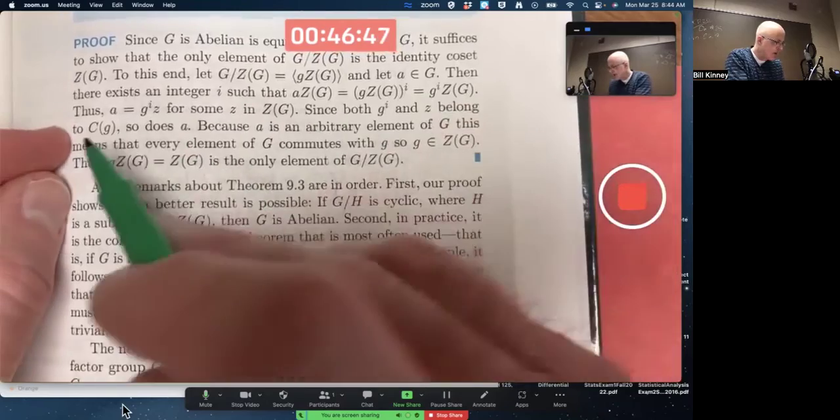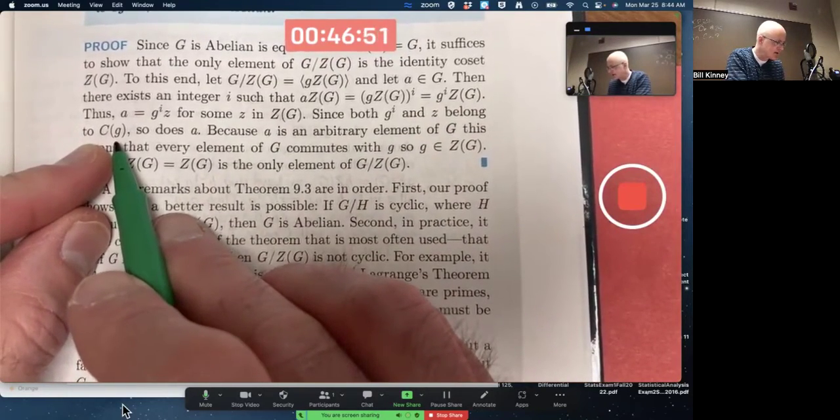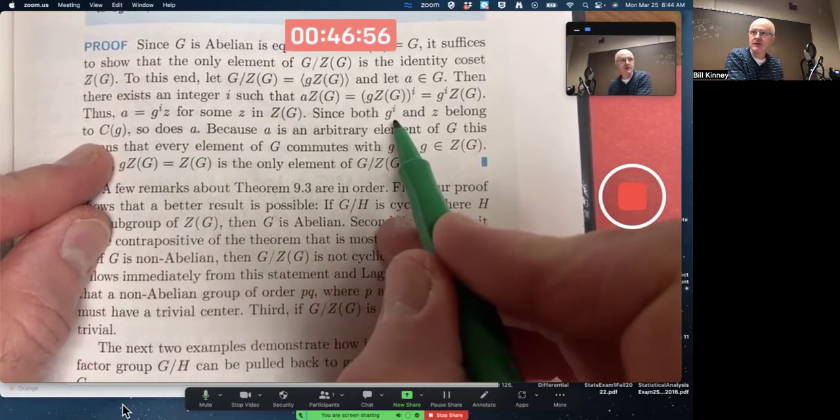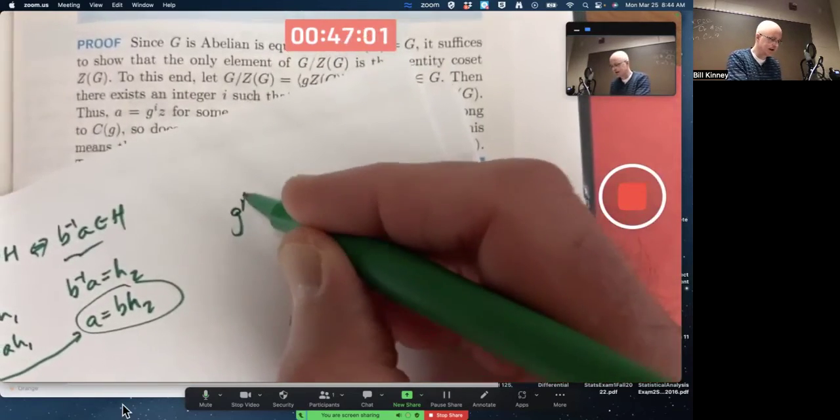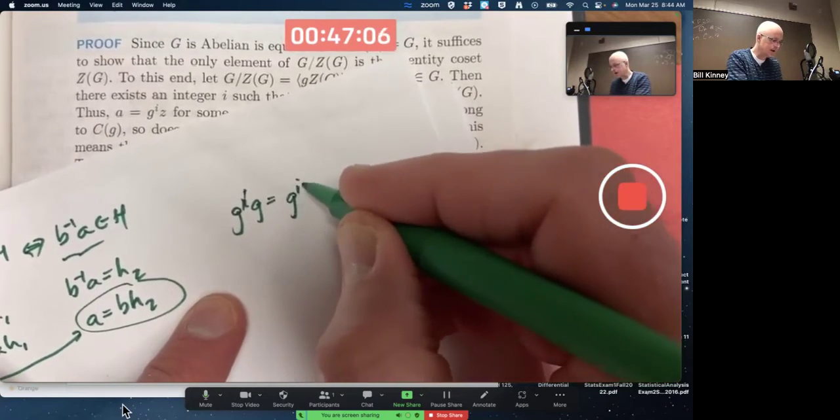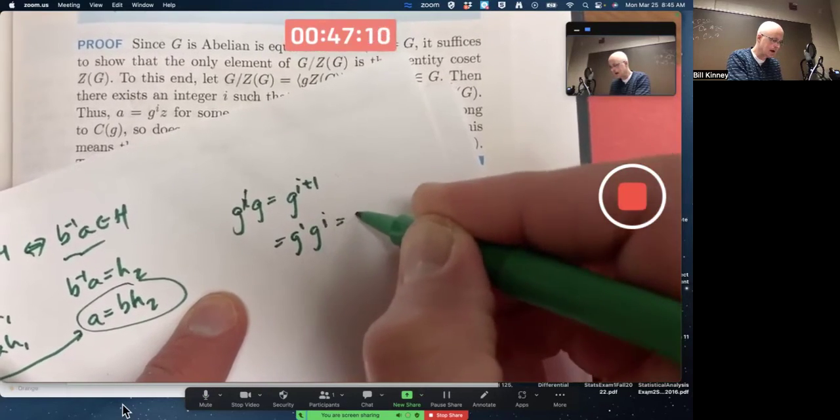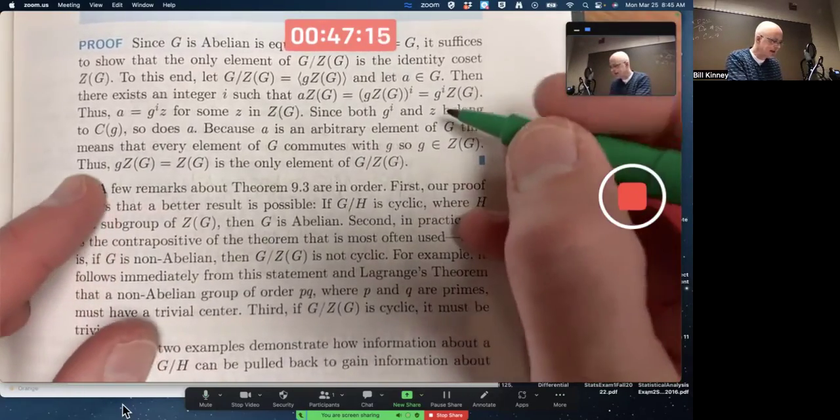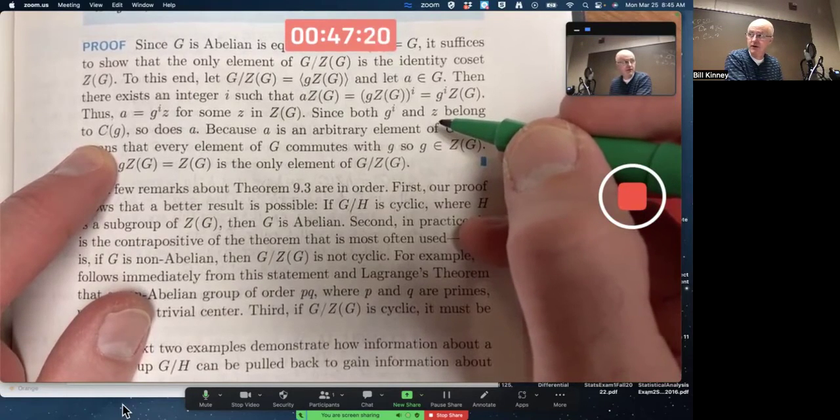G to the i and z both belong to these. What's this? This is the centralizer of G, of little g. Why? Well, g to the i commutes with g for sure. G to the i commutes with g because it's a power of g. You could write that. And z is in the centralizer of g as well because z is in the center. It commutes with everything, so it commutes with g.